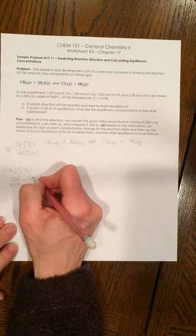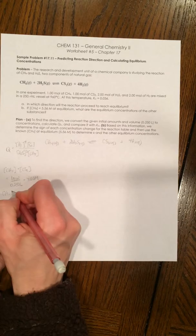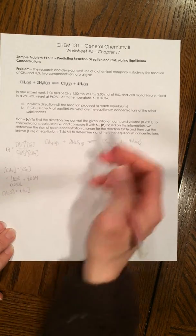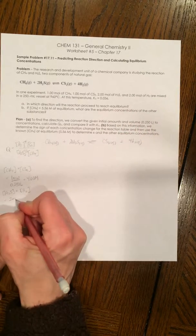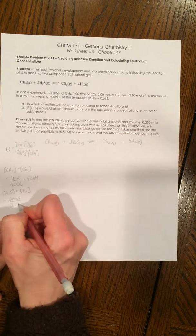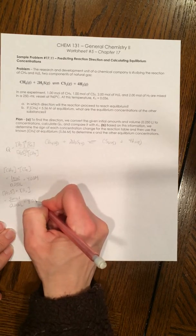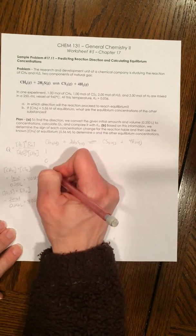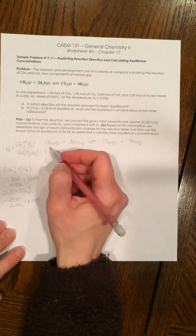And then the concentration of H2S is going to equal that of H2. And that's, again, because we're given two moles of each of these. So we're going to have two moles in 0.250 liters. And so we have eight molar for those quantities. So when we set up our ice table here, these are the initial values that go in.